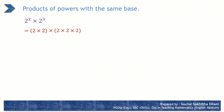Therefore, when multiplying the powers 2 to the power 2 and 2 to the power 3, 2 is repeatedly multiplied 5 times. It can be written as a power, that is 2 to the power 5. So, 2 to the power 2 into 2 to the power 3 equals 2 to the power 5.